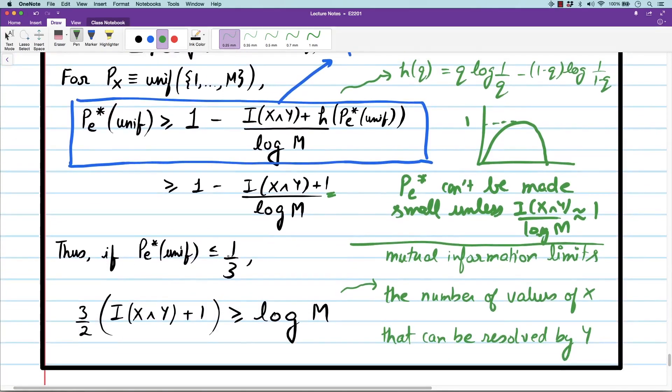To be more concrete, if you want the probability of error to be less than one third, some reasonable probability of error, then the mutual information must exceed log M. The number of values of x that can be resolved with y, the log of that value is roughly mutual information. That's what Fano's inequality says.